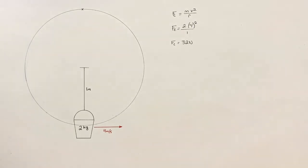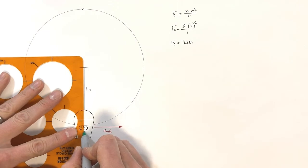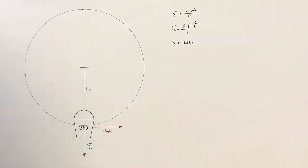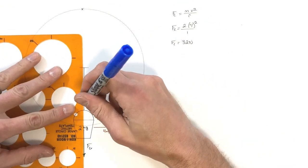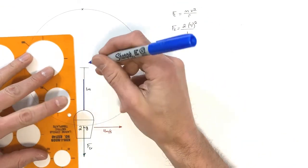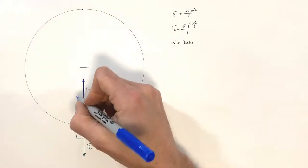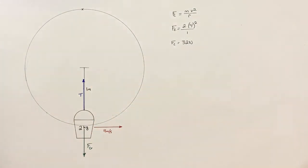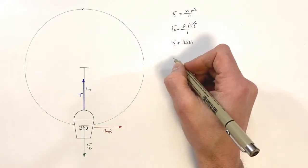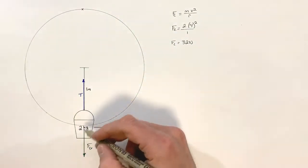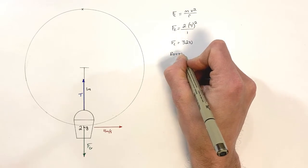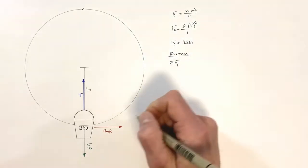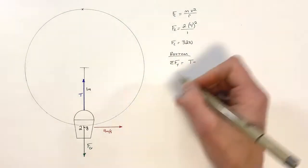First we have gravity acting downward — the force of gravity equals mg. Then we have the tension in the string pulling straight up. When the bucket is at its lowest point, tension is pulling straight up and gravity is pulling straight down. These two forces do not add up to zero; they create a net force. The net force in the y-axis is equal to the tension minus the force of gravity.